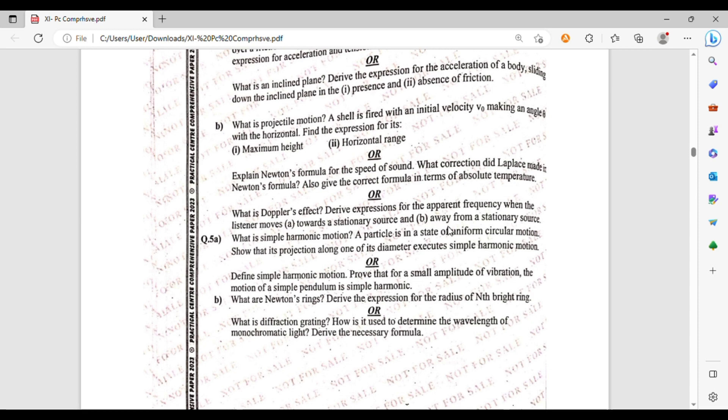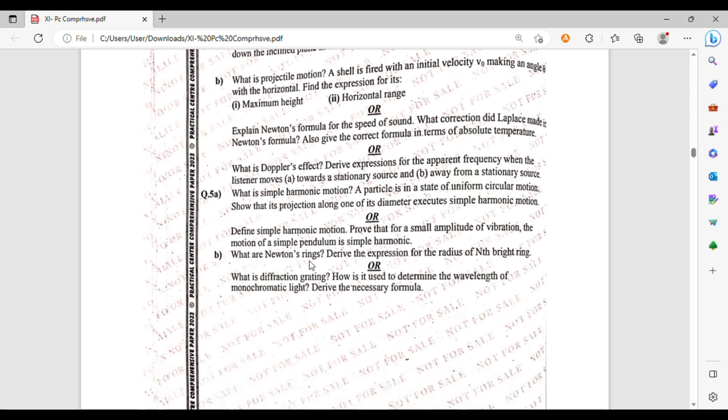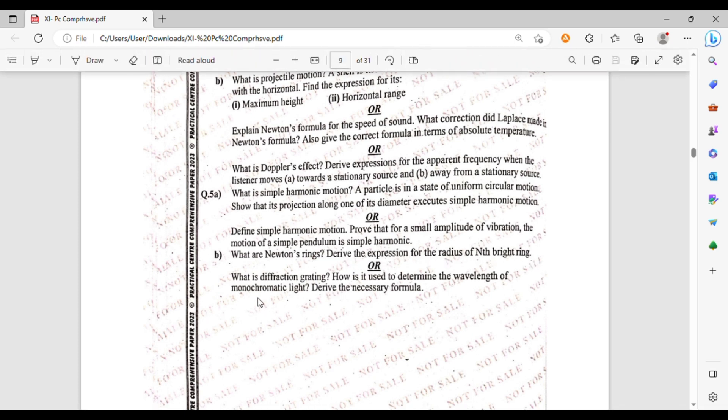Question number 5: what is simple harmonic motion? A particle in the state of uniform circular motion, show that the projection along one of its diameters executes simple harmonic motion. Or define simple harmonic motion and prove that for small amplitude of vibration, the motion of a simple pendulum is simple harmonic. Part b: define Newton's rings. Derive the expression for the radius of nth bright ring. Or what is diffraction grating? How is it used to determine the wavelength of monochromatic light? Derive its necessary formula.